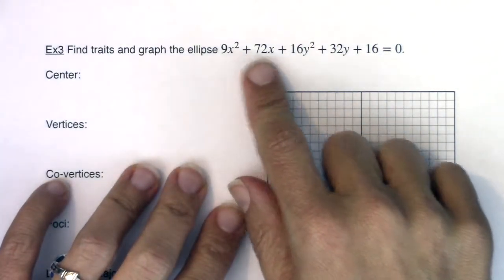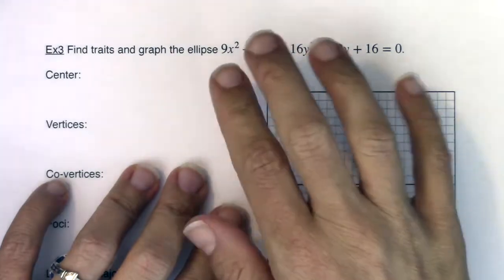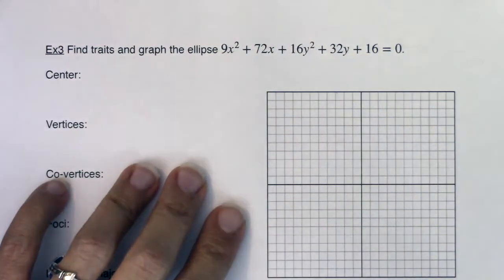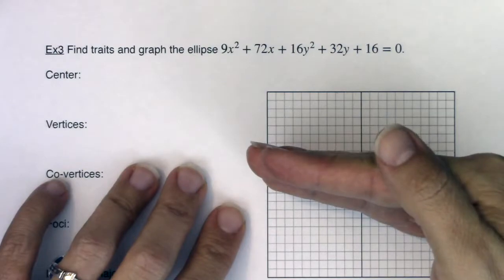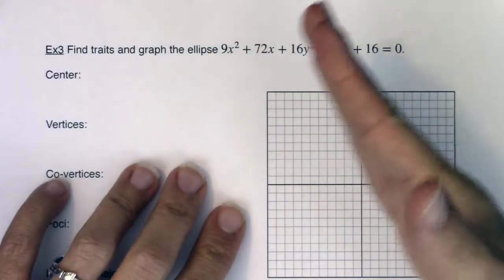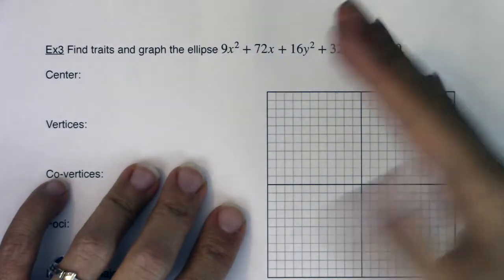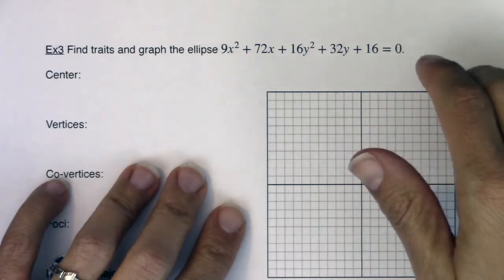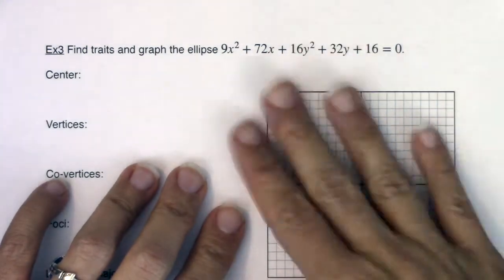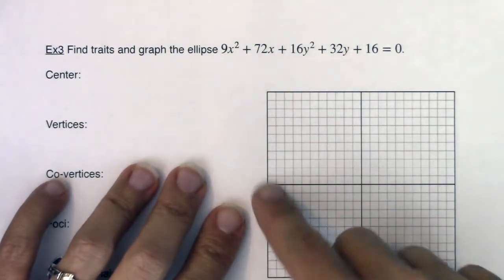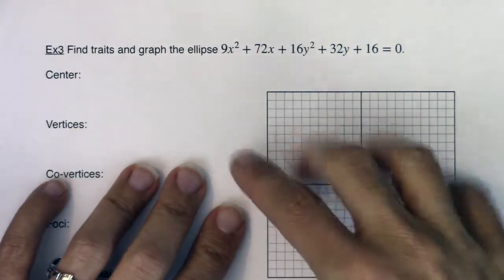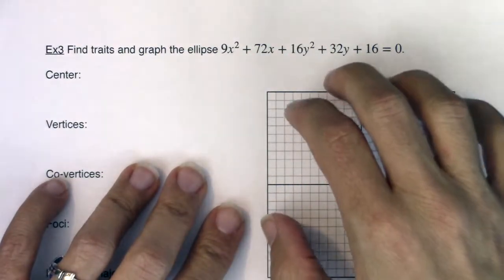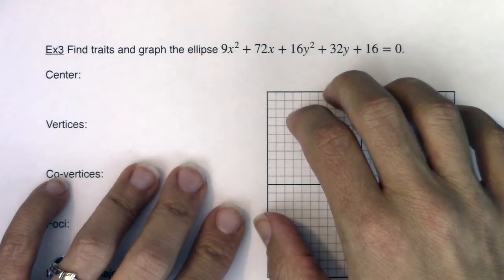The first thing you have to do is get this equation into standard form, because it's in standard form where you can read a, b, and c — or at least a squared and b squared — get to c squared, and you can also see your center. I can't see the center here just looking at it. I don't know what the center is, and I don't know what a or b is. So we need to move this into standard form.